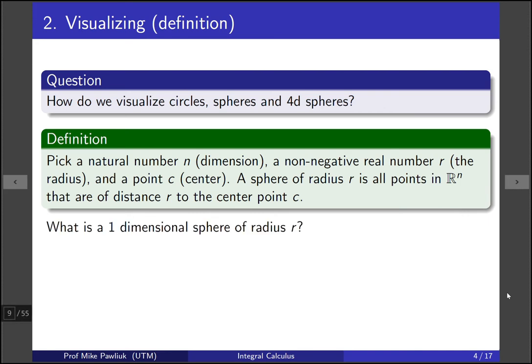So we know what a two-dimensional sphere looks like. It's all points in 2D space that are equidistant to a center point. And we know what a sphere looks like, a 3D sphere. So what does a one-dimensional sphere look like? We start with a center point, and then it's all points on the line that are of distance r to this point. So a one-dimensional sphere of radius r is exactly these two points here. A one-dimensional sphere is really just two points.